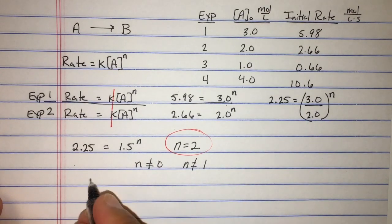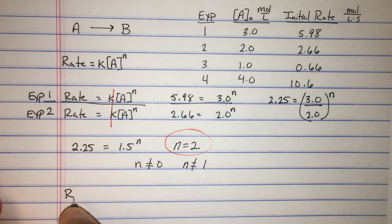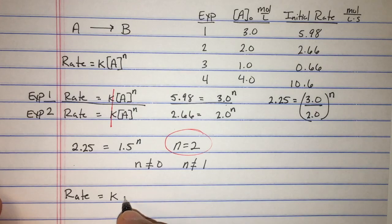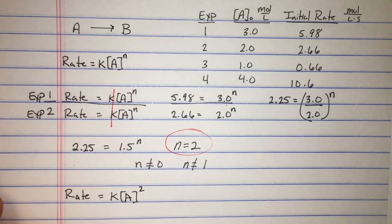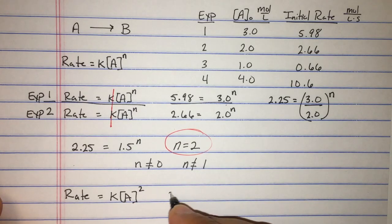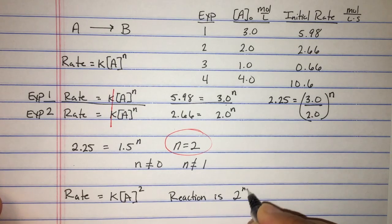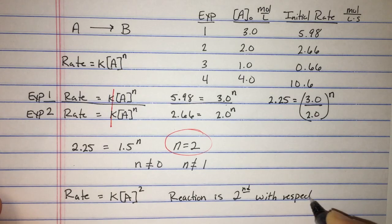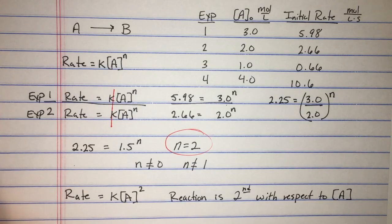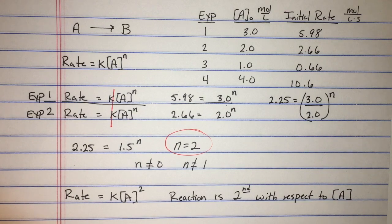Using the method of ratios we solved for the order with respect to A: n equals 2. The rate law is: rate equals k times [A] squared. We can say the reaction is second order with respect to species A.